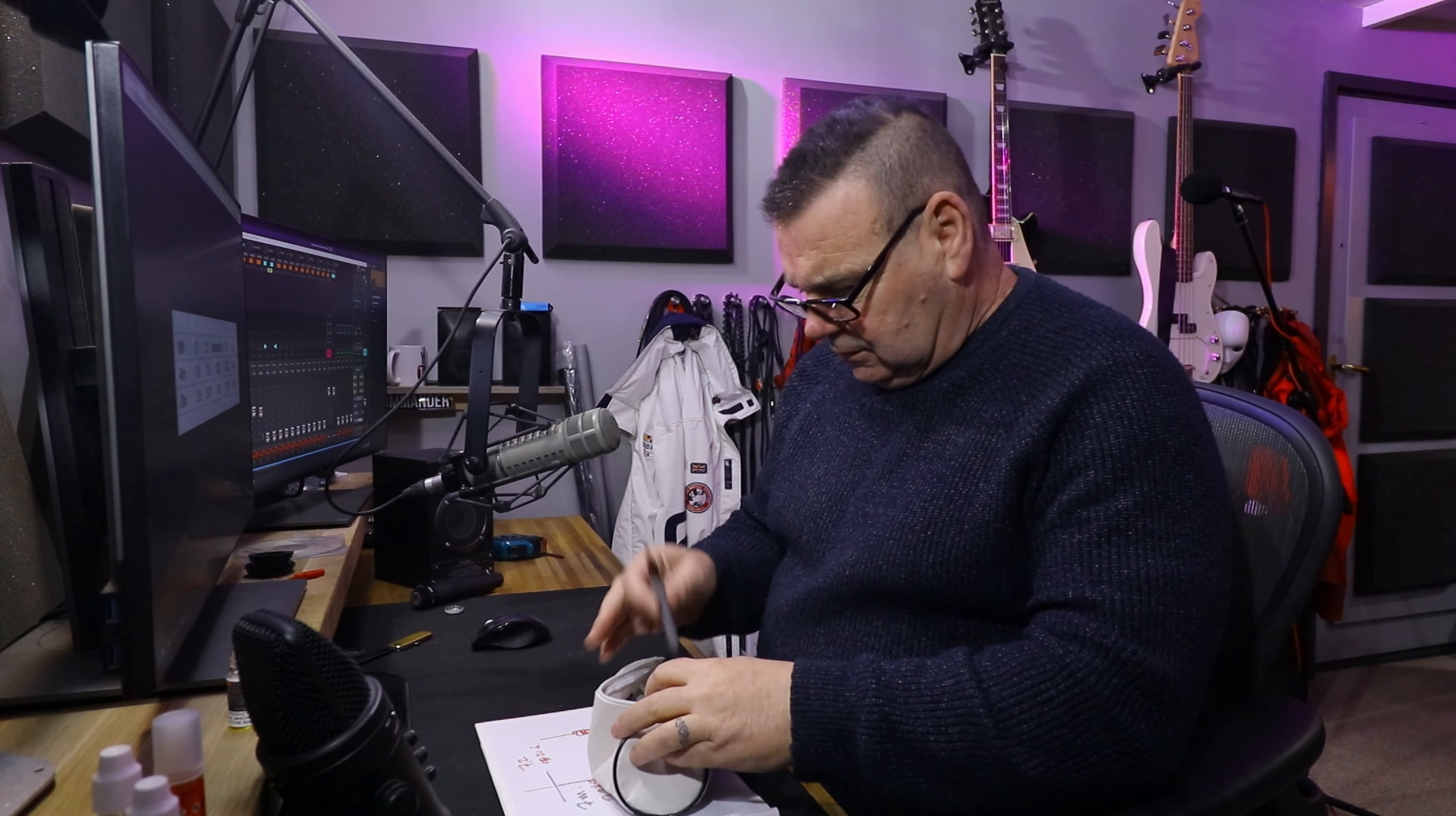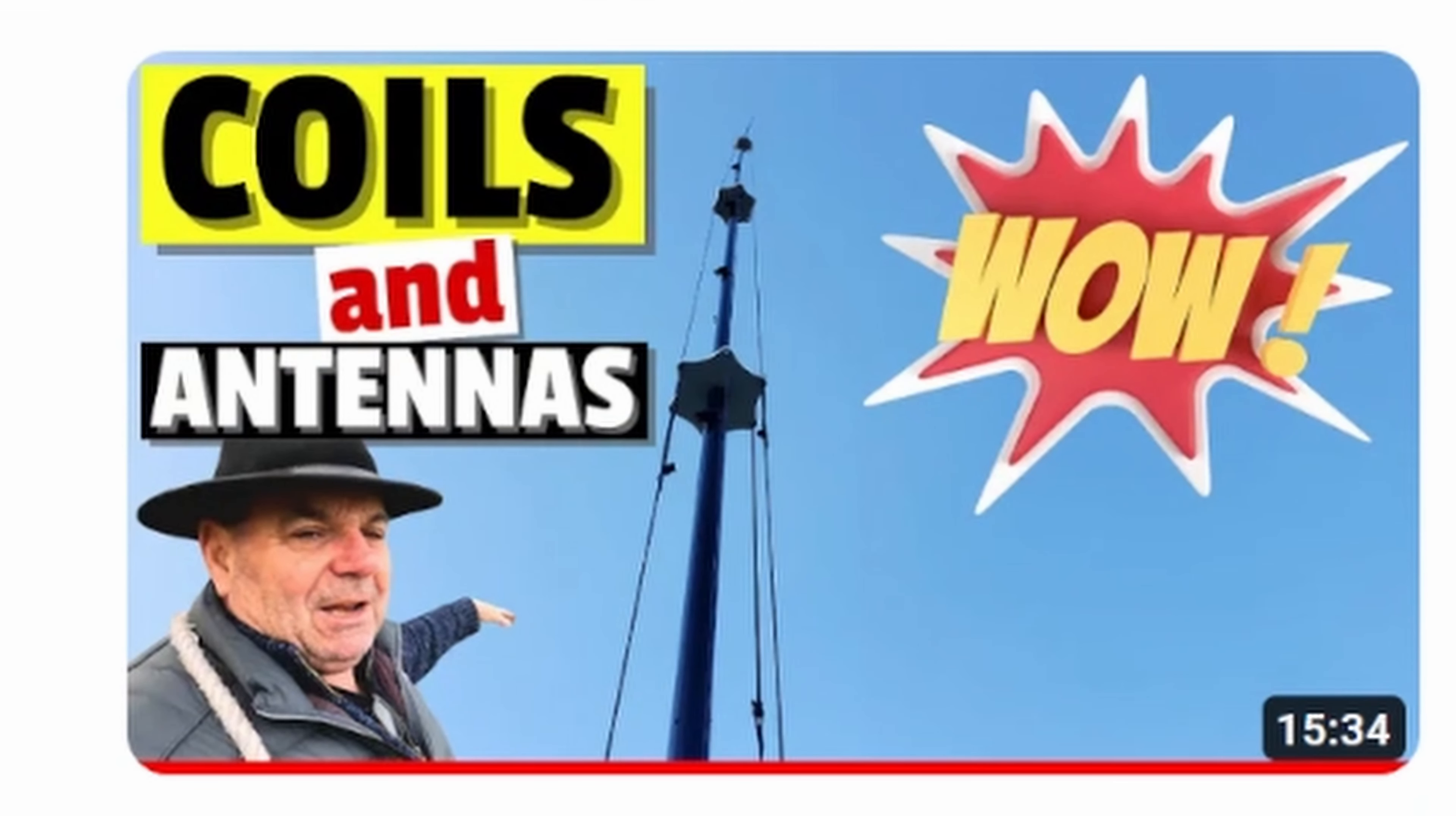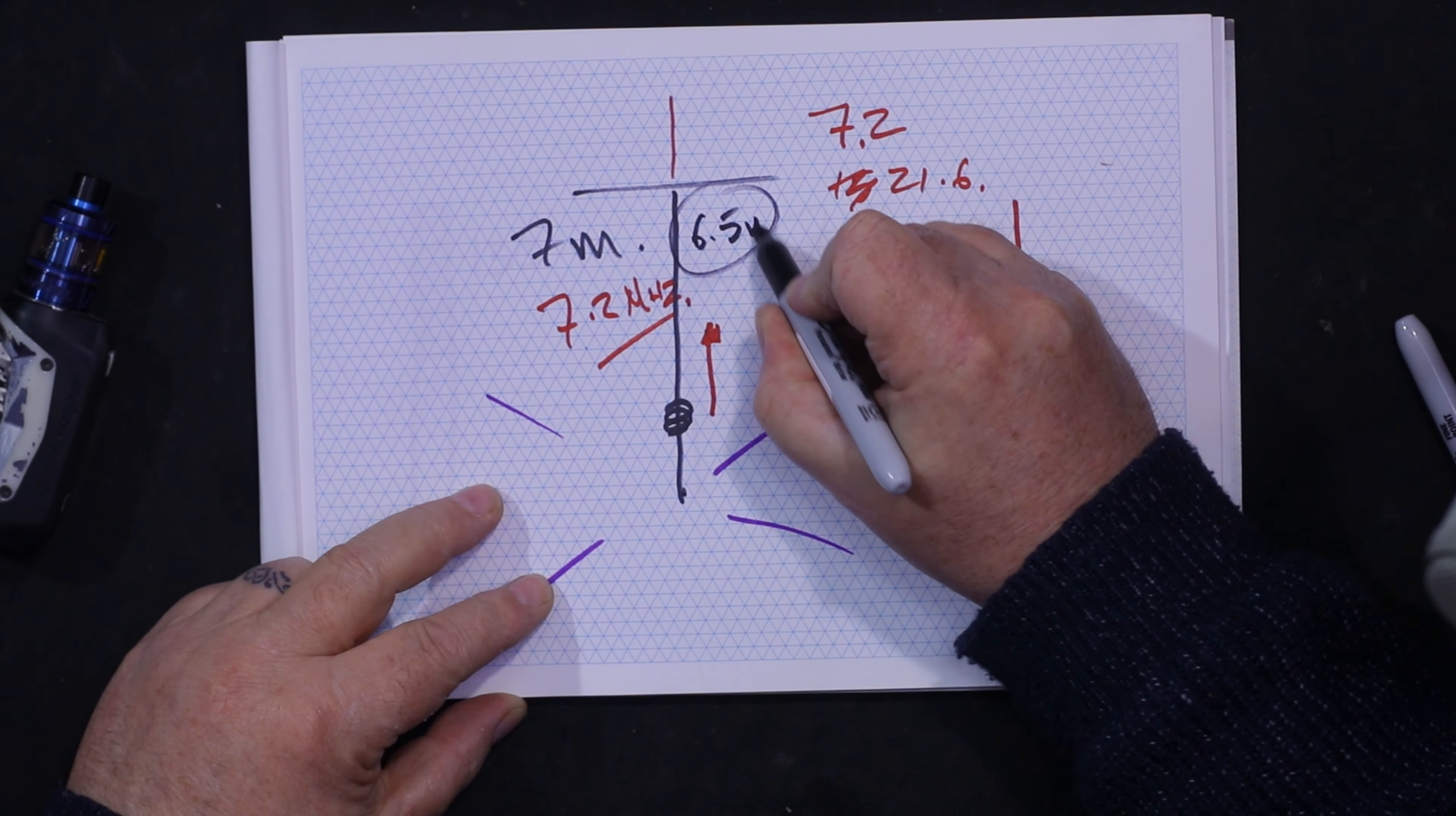In the last video, I discussed coils and antennas and all the weird things that happened. We have now made a 6.5 meter long antenna.